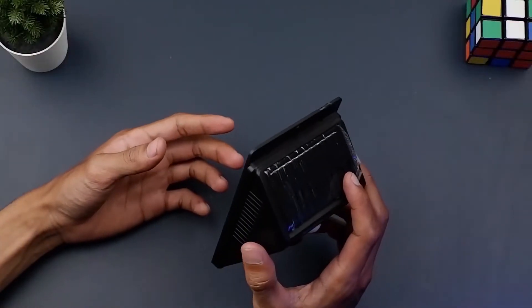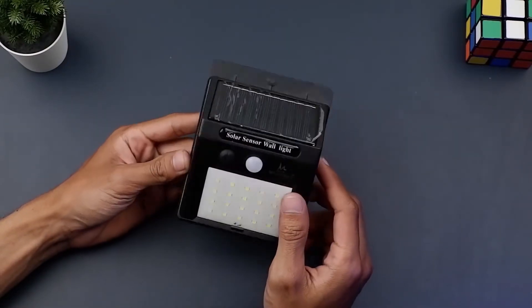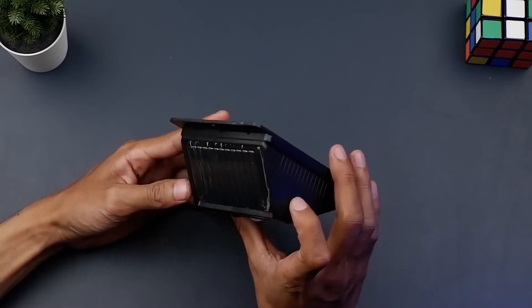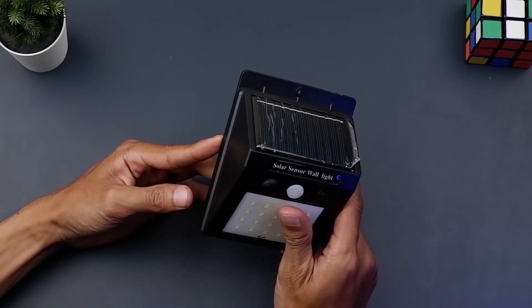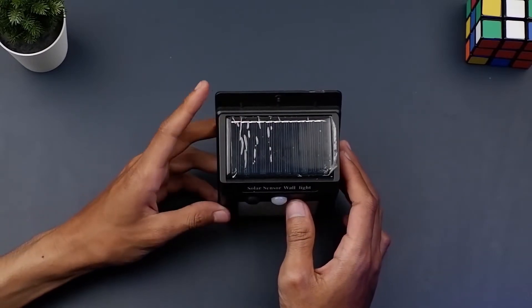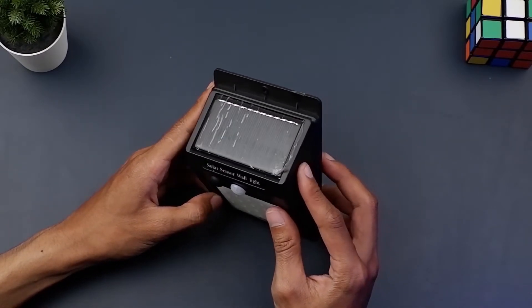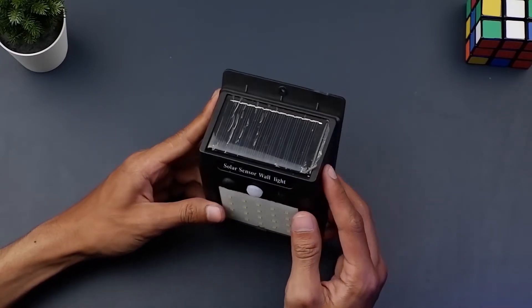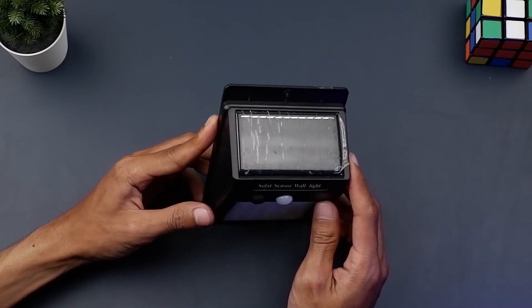Oke seperti itu tadi cara kerja dari sensor cahayanya. Lanjut saya akan bahas keunggulan dari produk ini secara singkat. Apa saja keunggulan dari produk ini atau lampu emergensi MS-10WLD ini. Pertama modelnya simple, kecil tapi lampu cukup terang seperti yang kalian lihat di video.